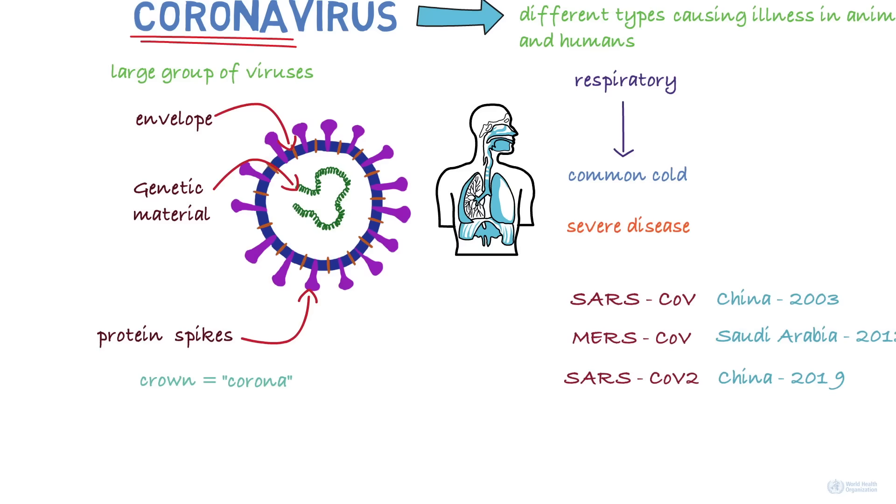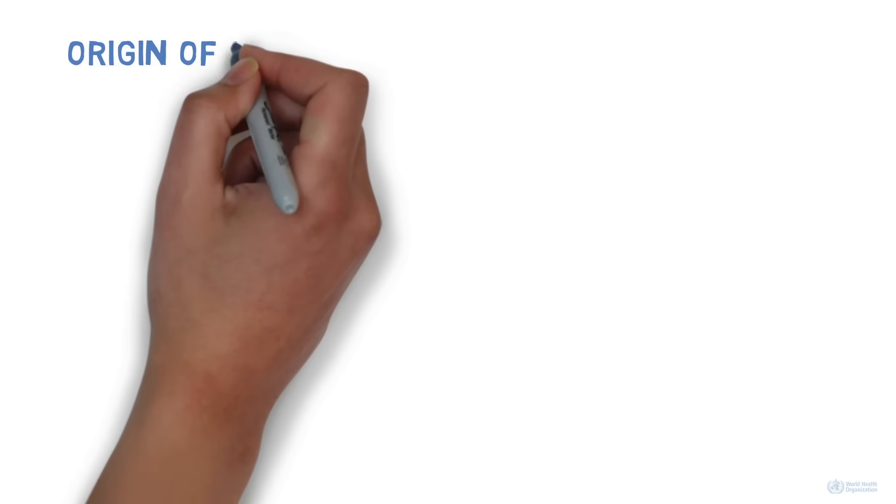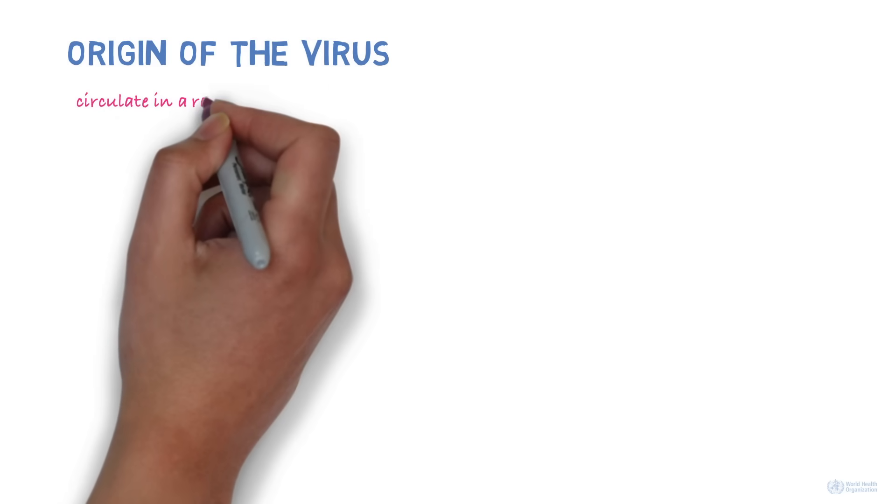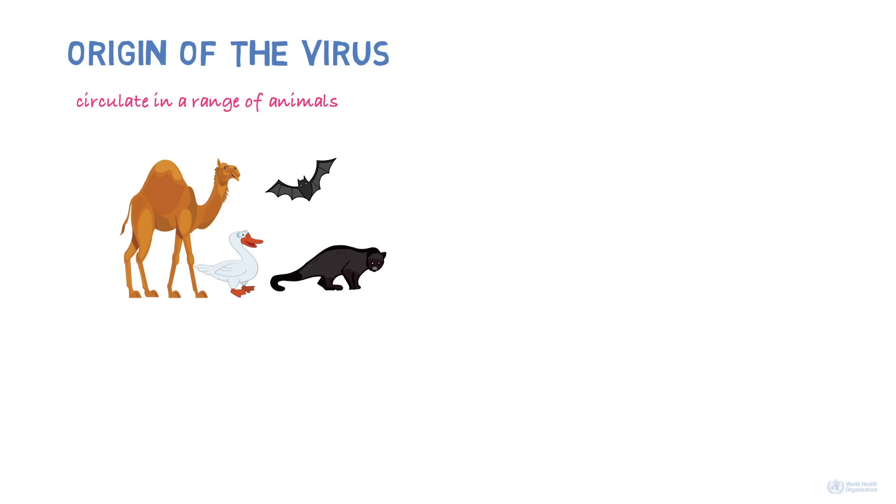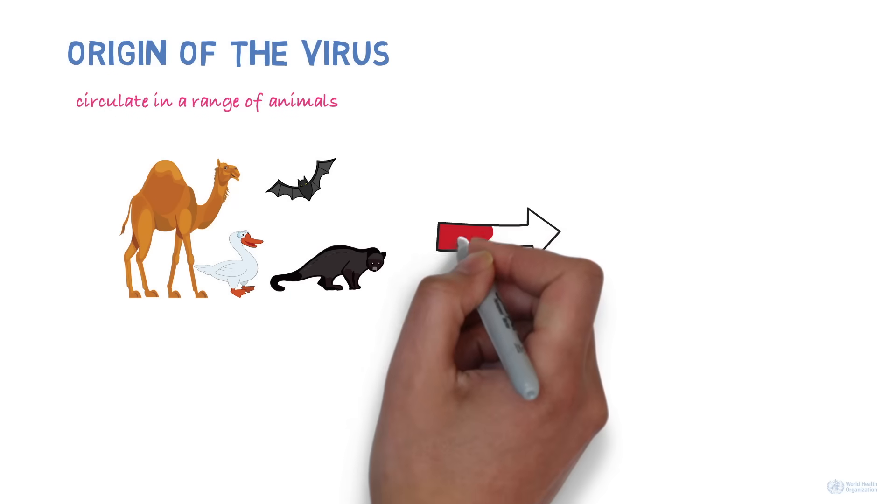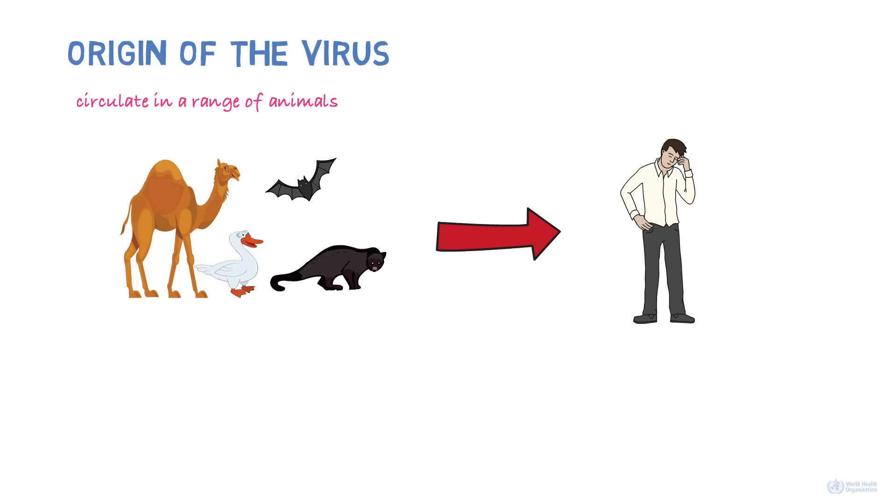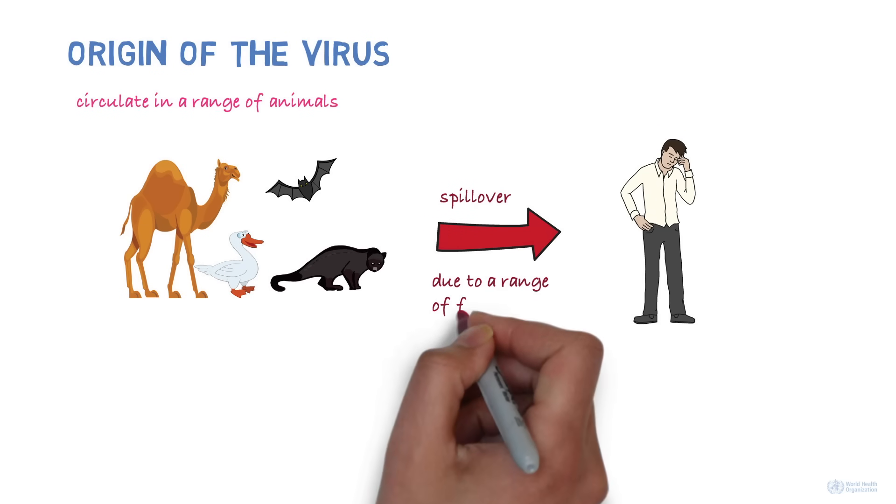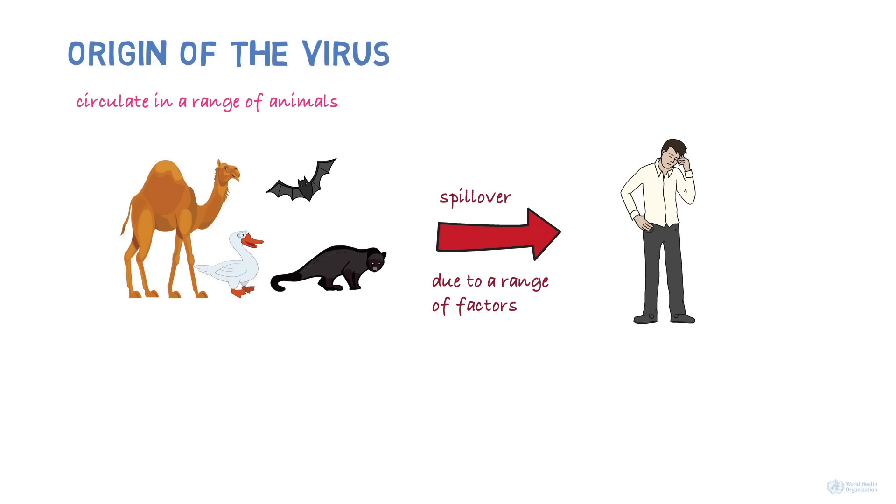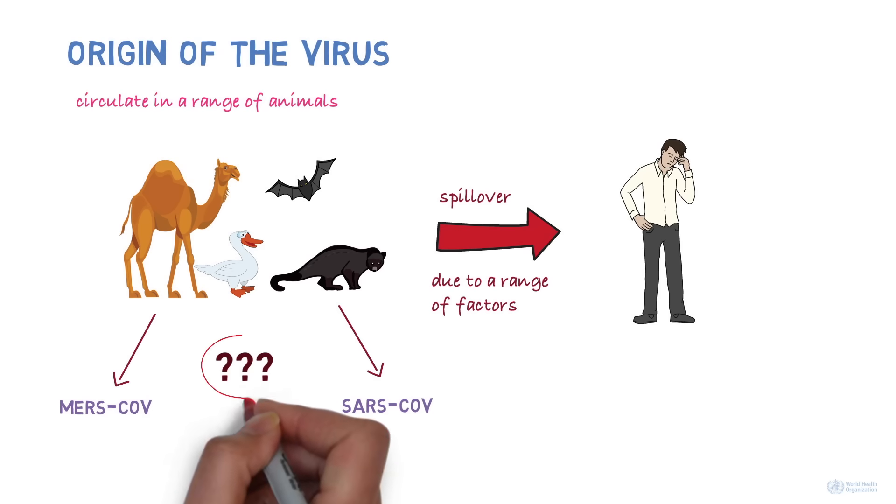So, where did this new virus come from? It's known that coronaviruses circulate in a range of animals. Sometimes, these viruses can make the jump from animals to humans. This is called a spillover and could be due to a range of factors, such as mutations in the virus or increased contact between humans and animals. For example, MERS-CoV is known to be transmitted from camels and SARS-CoV from civet cats. The animal reservoir of the new coronavirus is not known yet.